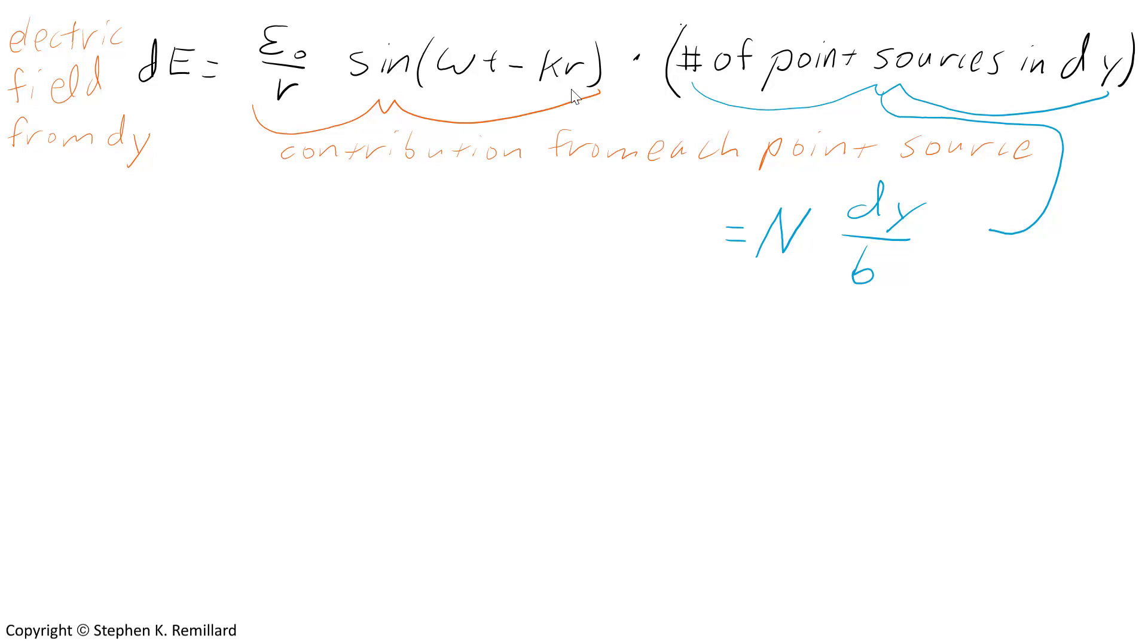The number of point sources contained in that differential element of length is the total number of point sources in the slit times the dy length of that segment divided by b, the total width of the slit. All of those numbers can be put together to make a differential for dE, but there are some approximations that can be made. At this point, then, we bring in Fraunhofer.